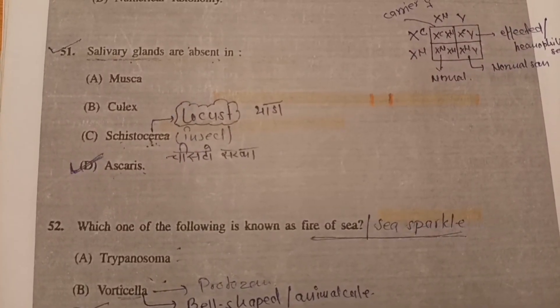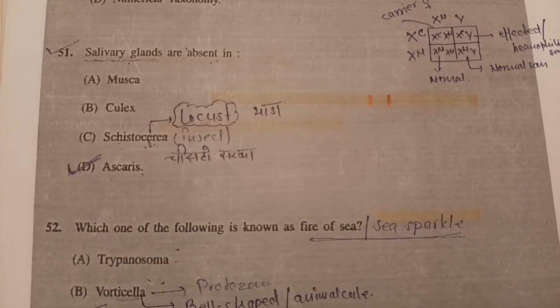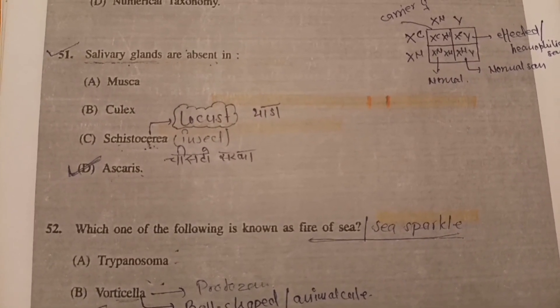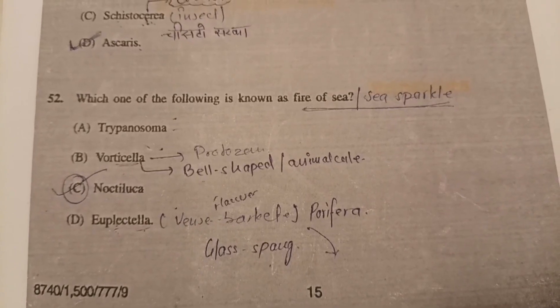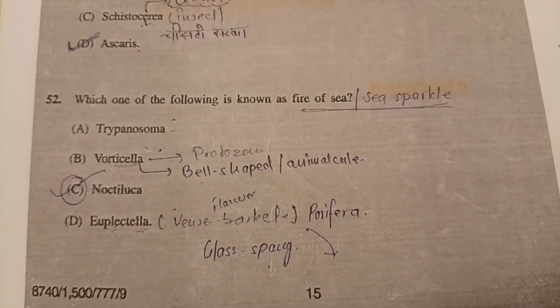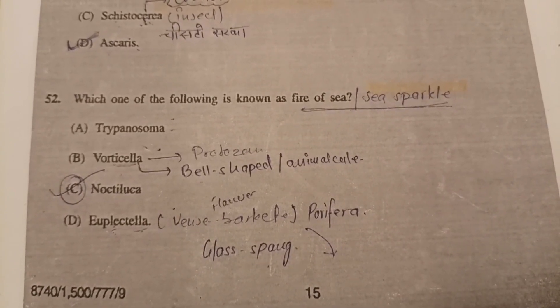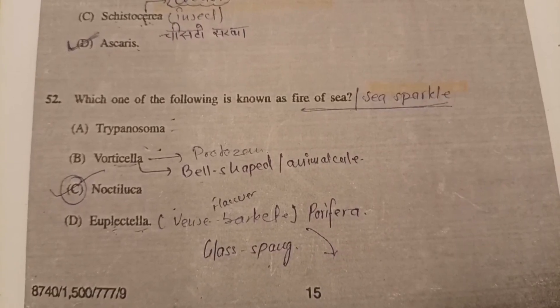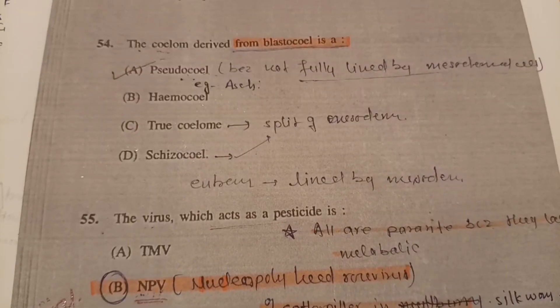Question 51: Salivary glands are absent in — correct answer will be D, Ascaris. Question 52: Which one of the following is known as 'fire of the sea'? Correct answer will be C, Noctiluca. Question 53: The external covering of nerve is composed of — option C, glycoproteins, is the correct answer.